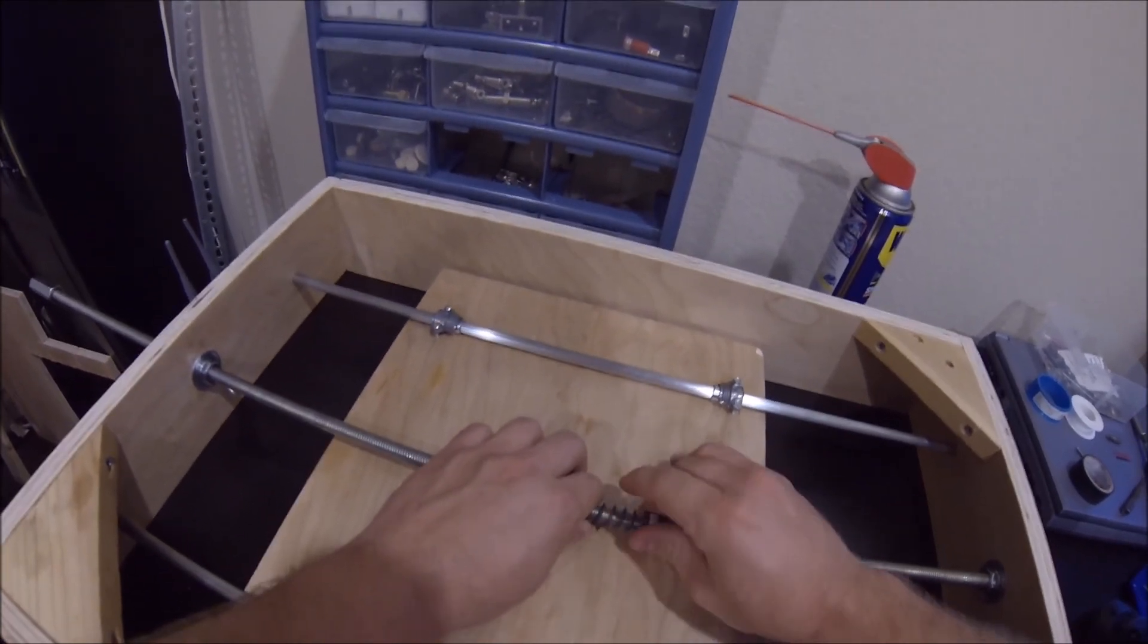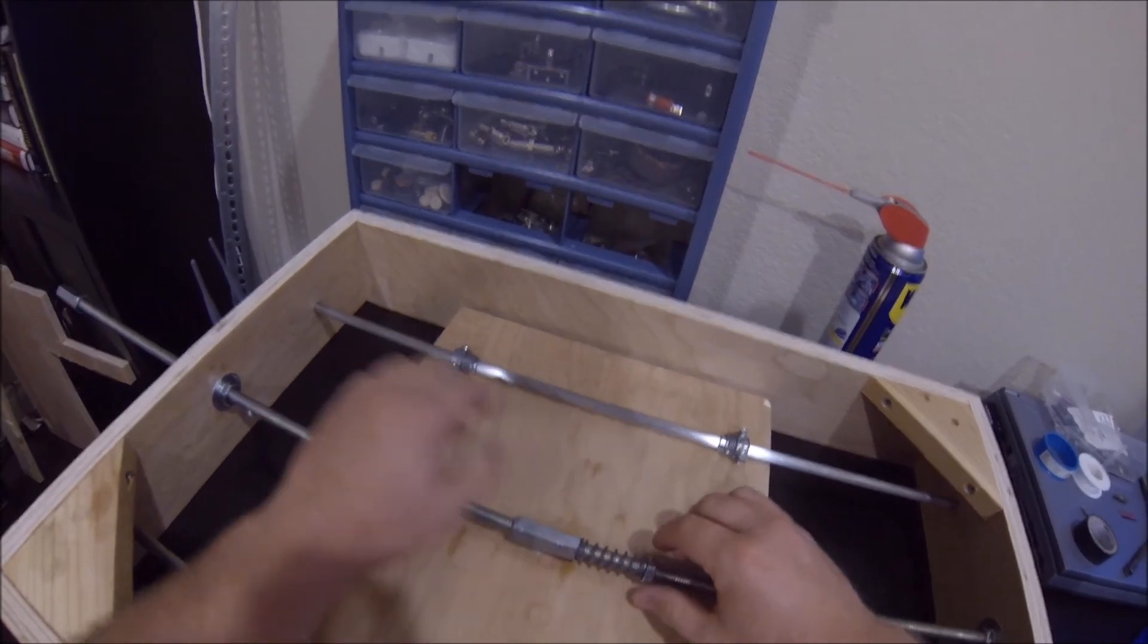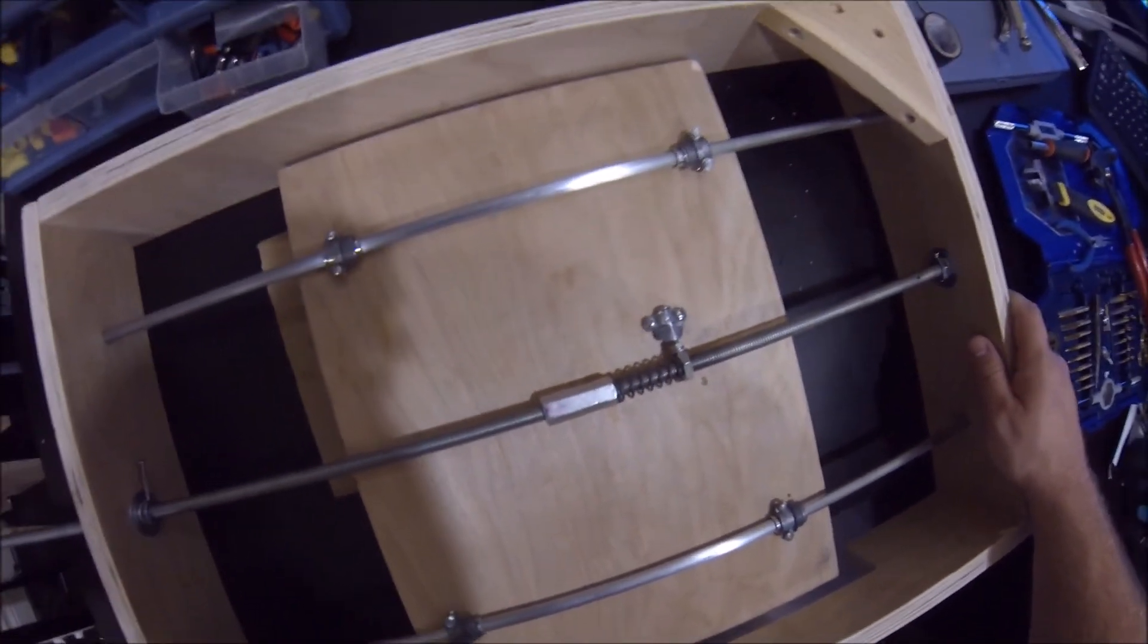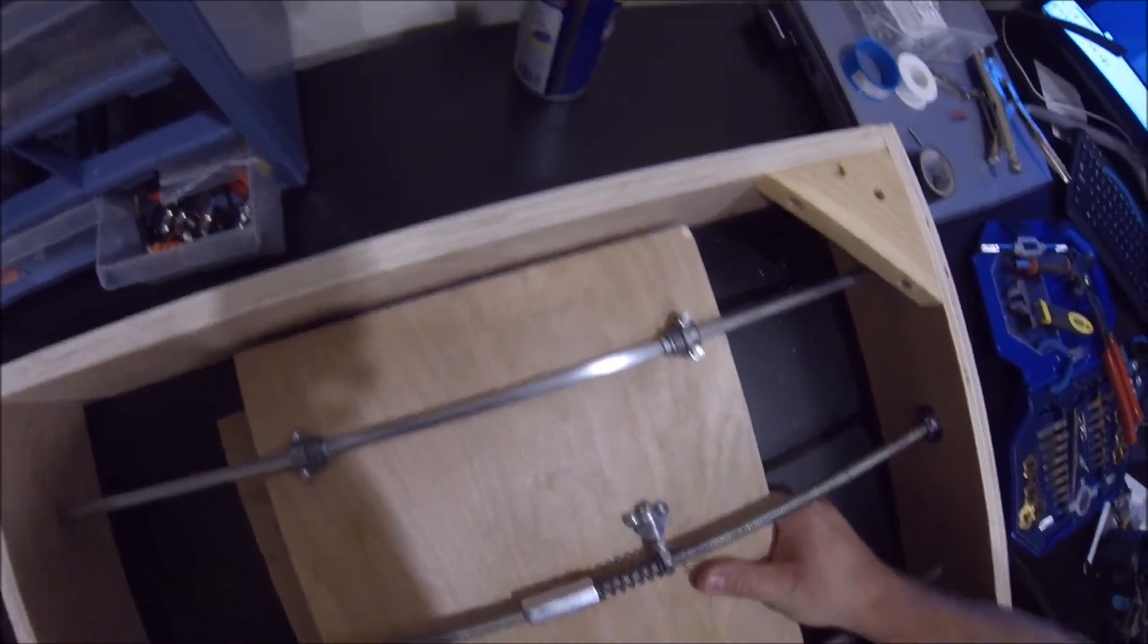Of course, you never get rid of the backlash, but you can compensate for it as long as the load on the table doesn't exceed the spring force. When I turn the lead screw, it's a lot more tight. There's really no backlash at all. I've got to push really hard to get it to jiggle at all.